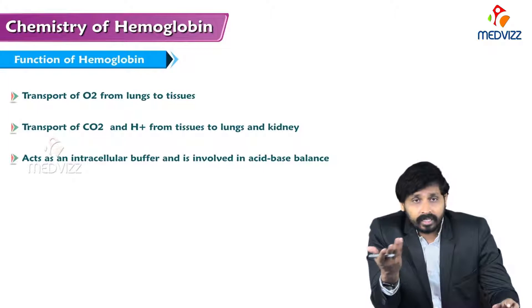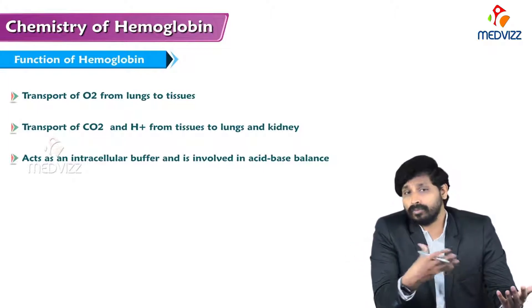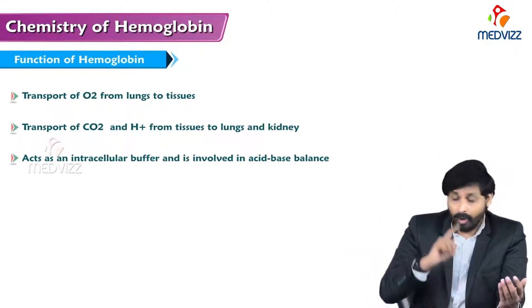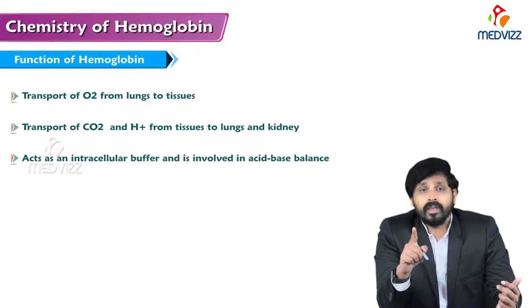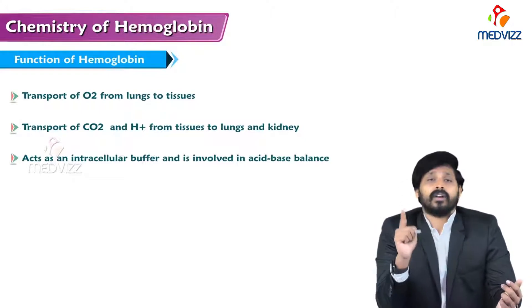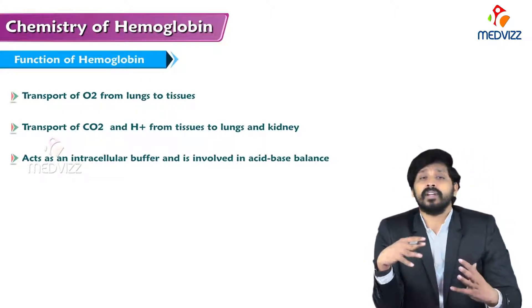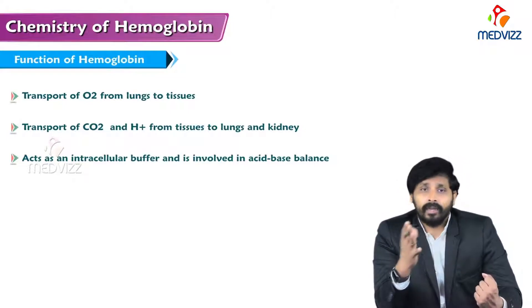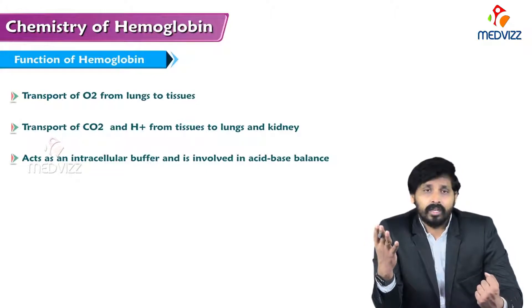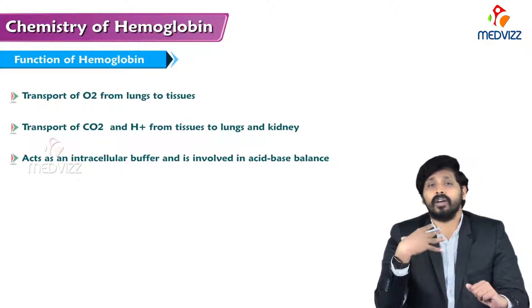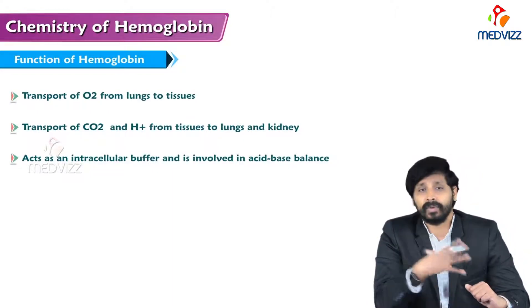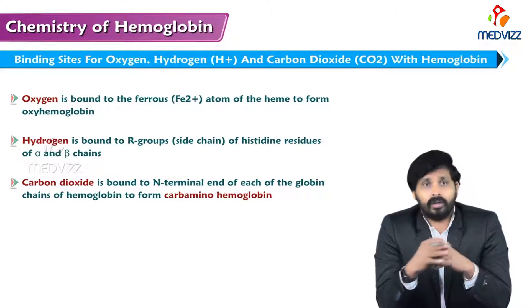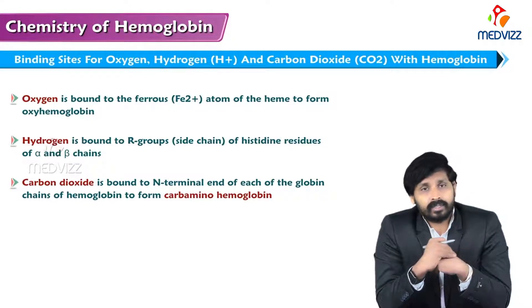The functions of hemoglobin include: transport of oxygen from lungs to tissues, transport of carbon dioxide and hydrogen ions from tissues to lungs and kidney, and importantly, acting as an intracellular buffer — resisting increases in hydrogen ion concentration. This makes hemoglobin an important secondary pathway in maintaining acid-base balance, neutralizing disturbances in acid-base concentration especially in peripheral tissues.